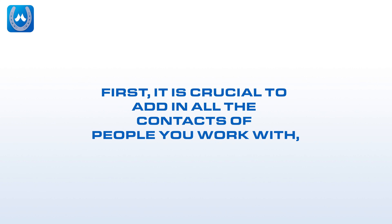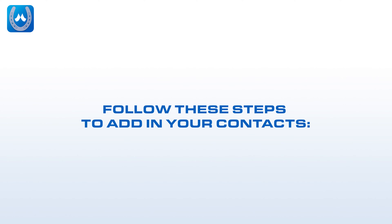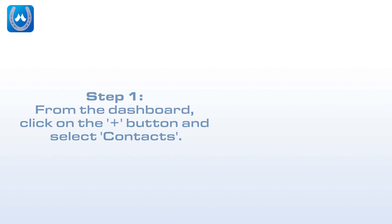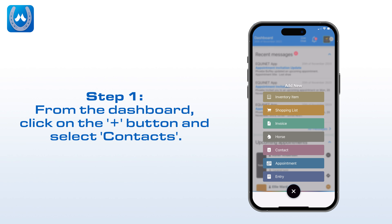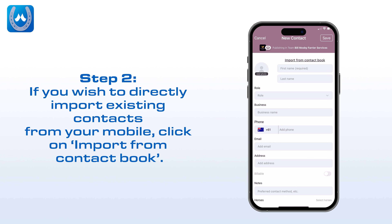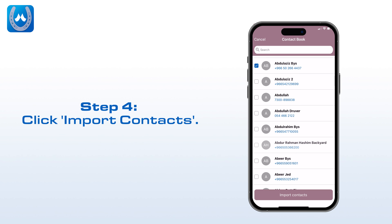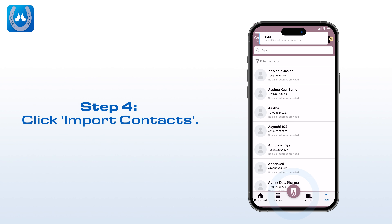First, it is crucial to add in all the contacts of people you work with, like stable managers, horse owners, and vets. Follow these steps to add in your contacts. Step 1: From the dashboard, click on the plus button and select Contacts. Step 2: If you wish to directly import existing contacts from your mobile, click on Import from Contact Book. Step 3: Choose contacts to import. Step 4: Click Import Contacts.